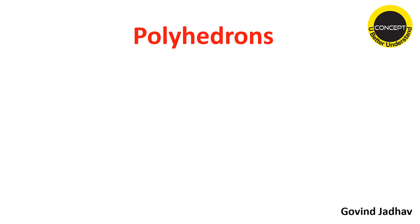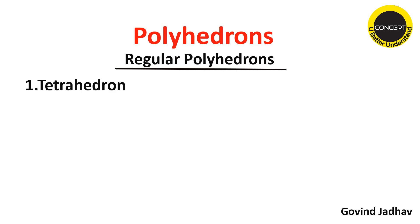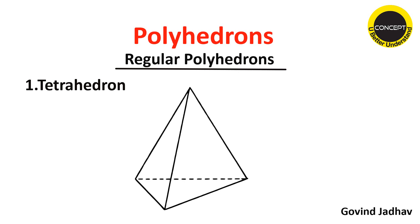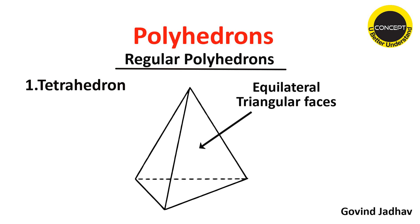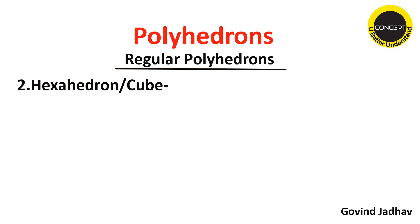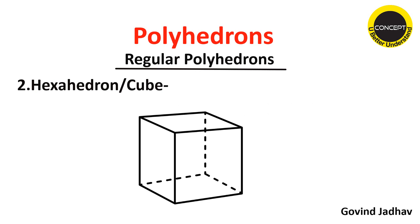Now let's go to the regular polyhedrons. The first regular polyhedron is the tetrahedron — 'tetra' means four. This solid has four equilateral triangular faces. It is not a prism. In engineering drawing, a tetrahedron has four equal faces and all four faces are equilateral triangles; it requires only one dimension. The next one is hexahedron — you've seen this solid many times; it is popularly called a cube. A cube has six equal faces, that's why the name is hexahedron, and all these equal faces are squares.